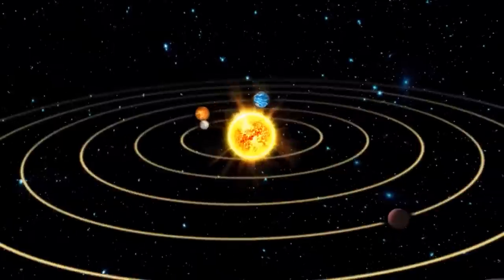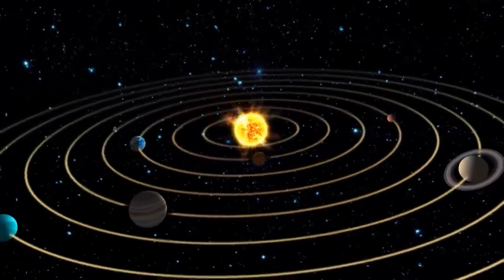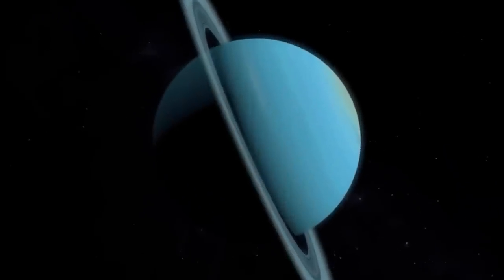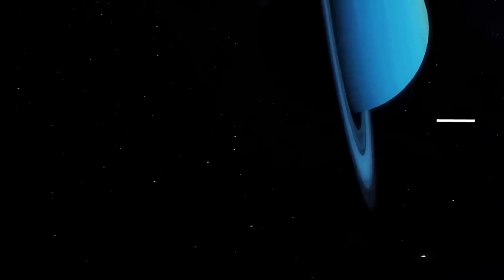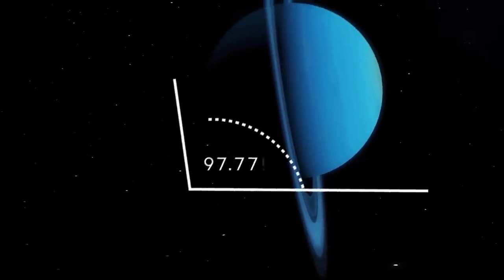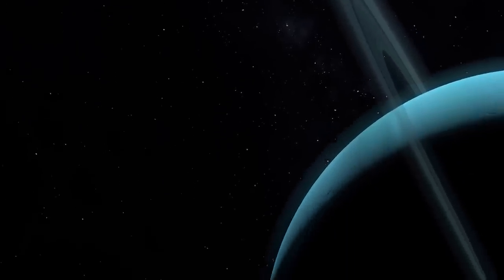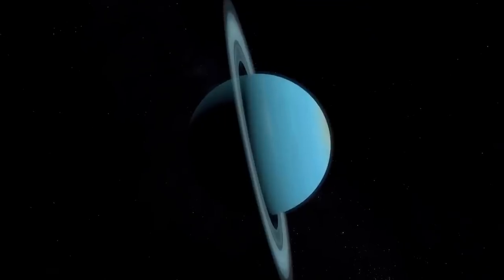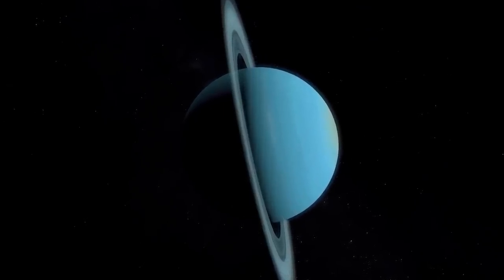While most planets move like spinning tops, Uranus seems to roll on its orbit. This is due to its rotation axis, which is inclined by 80% with respect to its orbit, a particularity which must have been forged since the formation of the solar system.